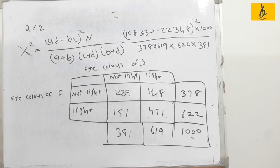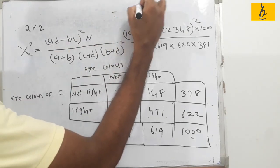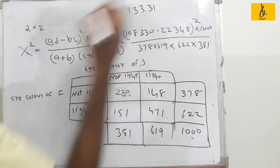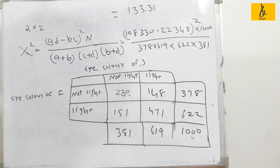We get the final answer here. We have it: 33 point something. So we will discuss the first class, then make it easy to understand. We will ask and work out the problem using the shortcut method for the chi-square test.